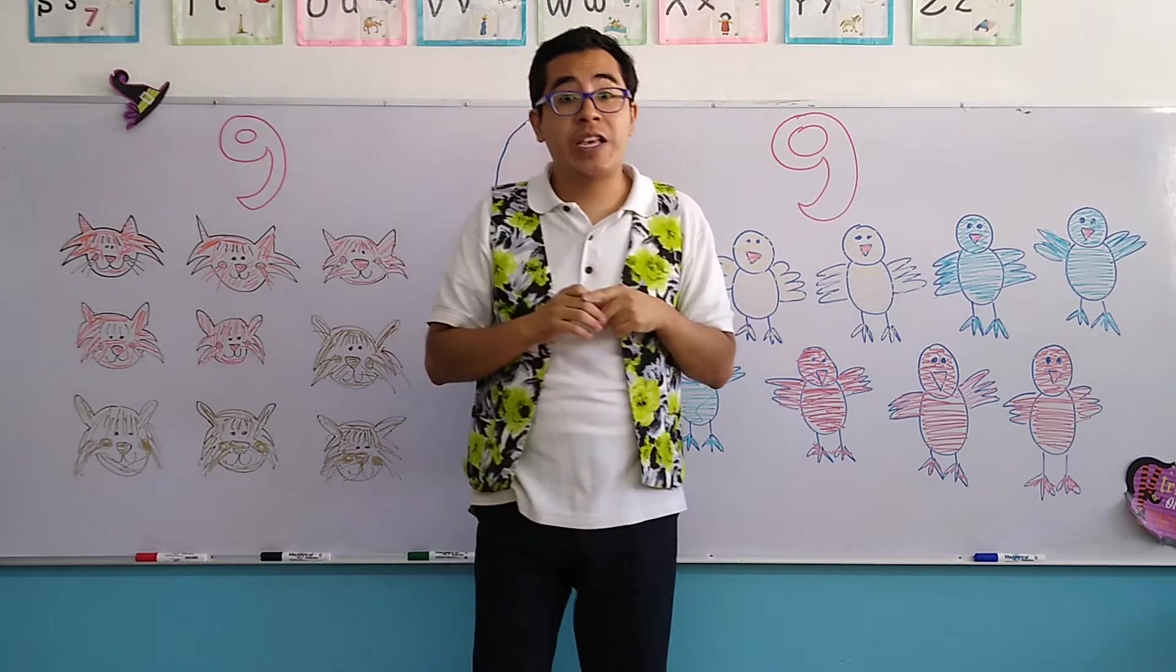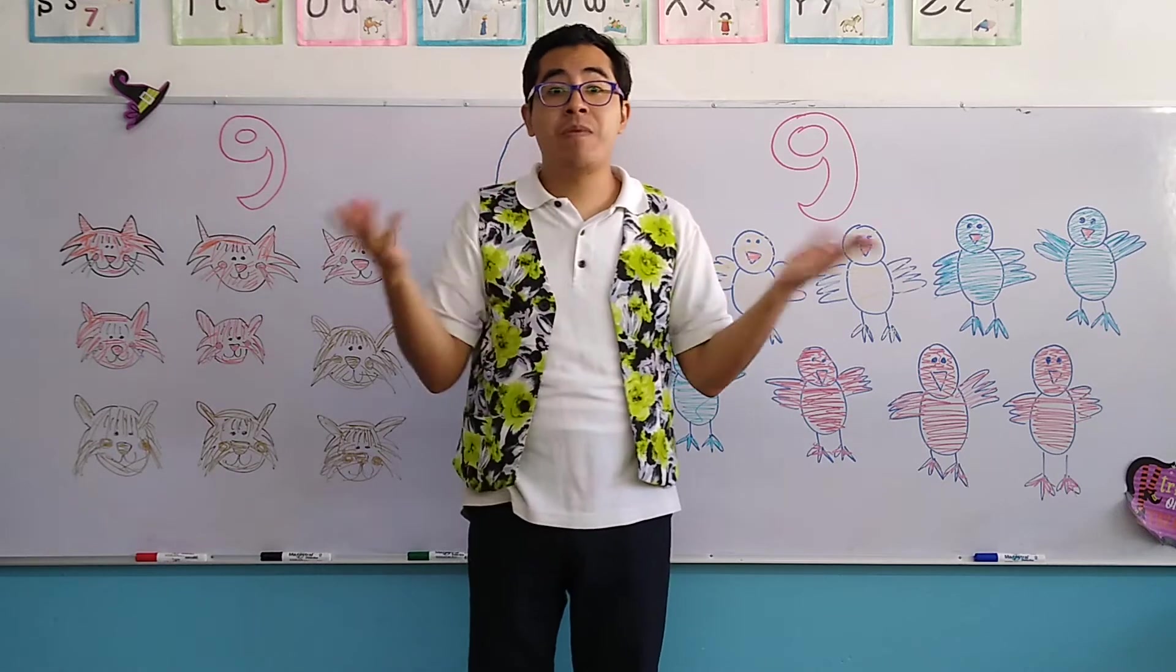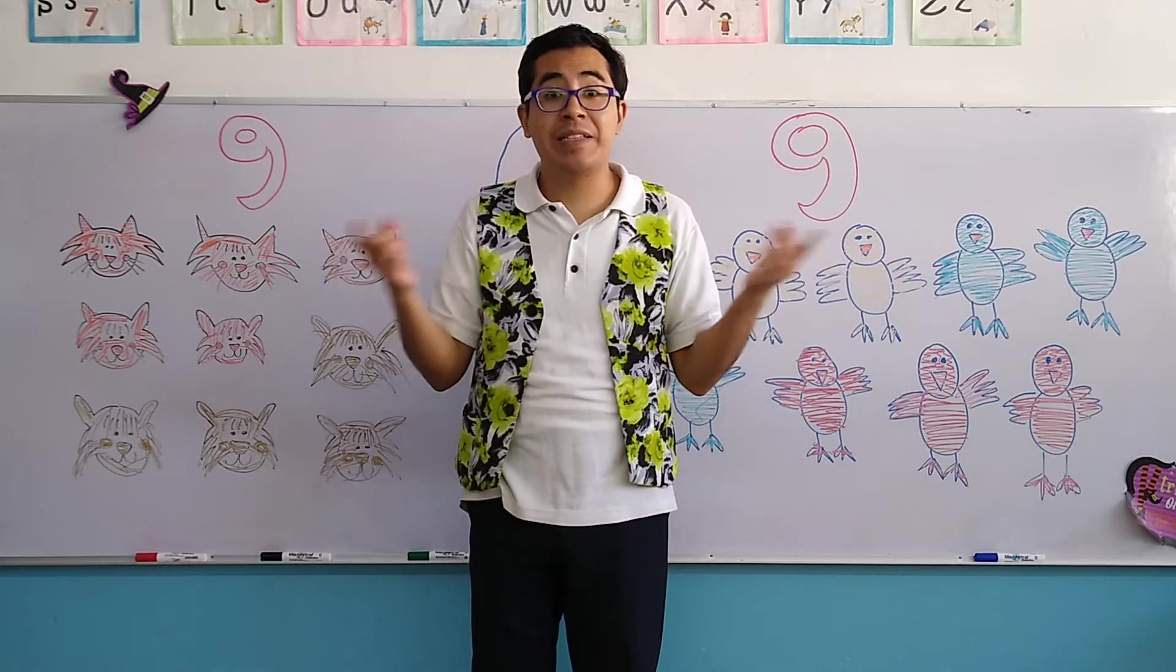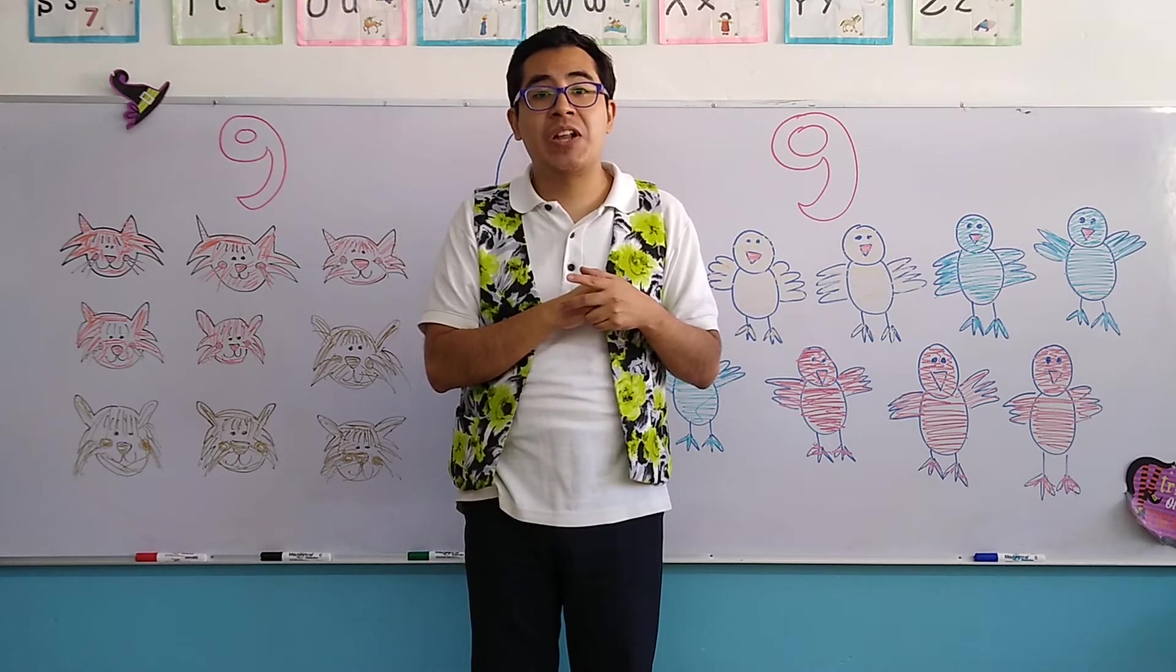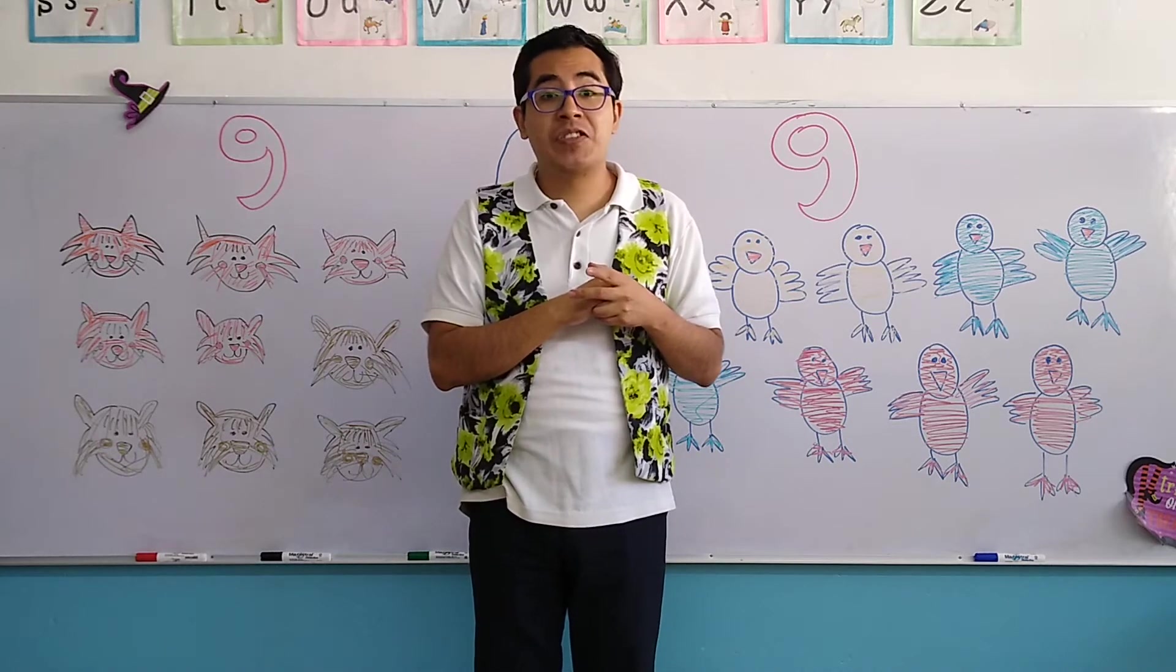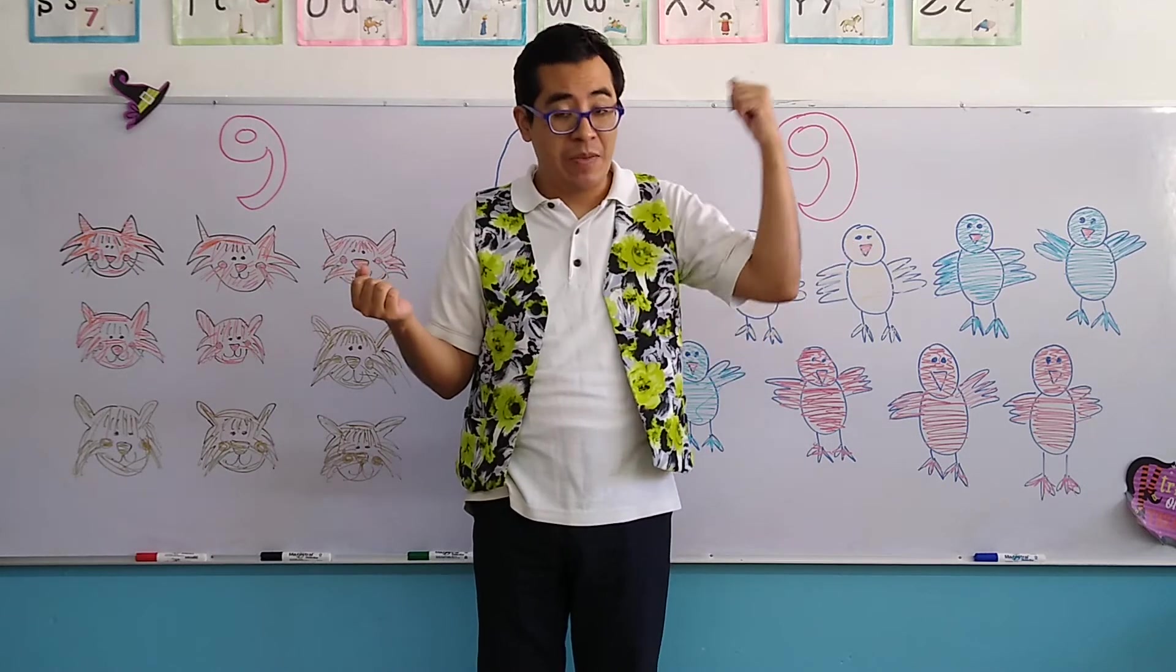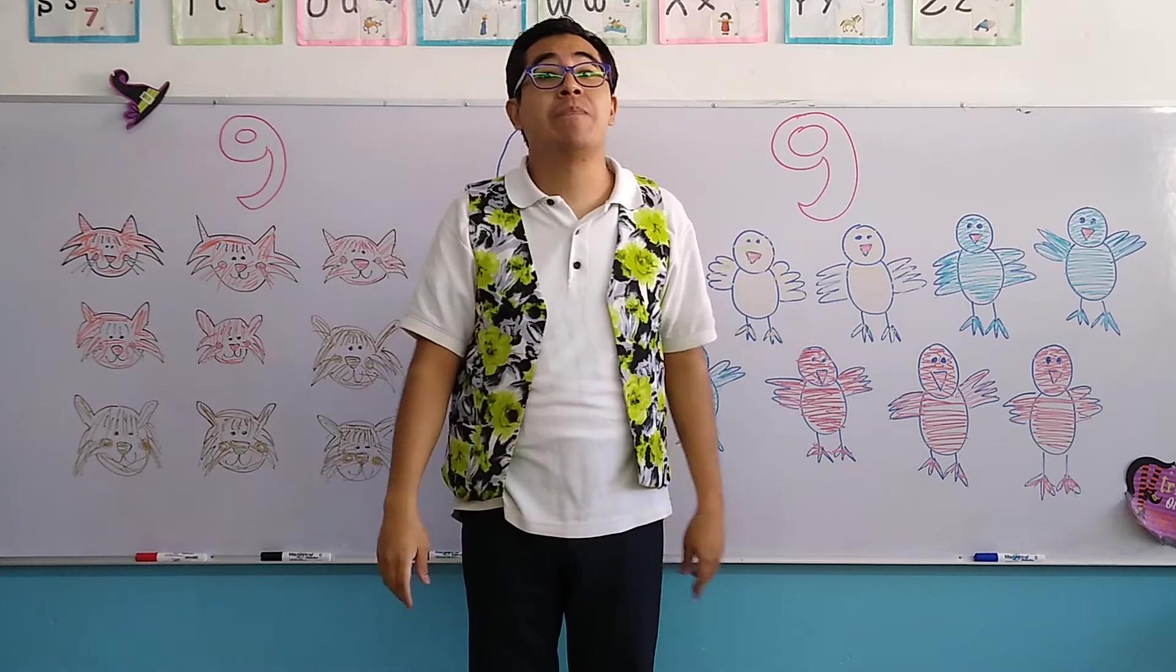Yesterday we associated the number 9 with an animal. Do you remember the animal of yesterday? Exactly, the dog. Don't forget that a dog makes noises like woof, woof, woof. That's the sound of the dogs. And dogs have different colors. They can be brown, they can be white, or they can be black.